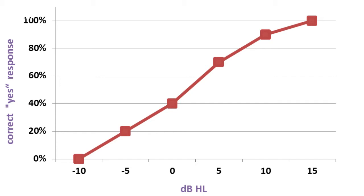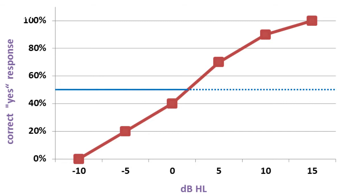I connect these dots and draw this kind of function. I go to the function and find the place for 50%. Note it is not a stimulus that we ever presented to the participant, but we can calculate that this is the point of 50%. Any point above this point, his chances to hear the stimulus are above 50%; any point below, his chances are below 50%. So this will be our 50% threshold.